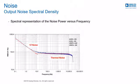When looking at a precision DAC datasheet, noise is specified in one or two ways: output noise spectral density, which is typically measured at 1 kHz and 10 kHz and specified in units of nanovolt per root hertz, and output voltage noise, or 1/f noise, which is a voltage peak-to-peak noise measurement.